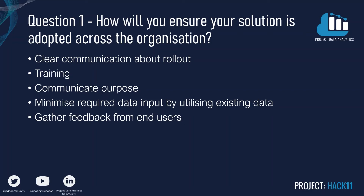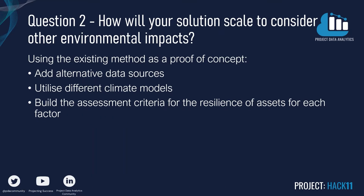Our methodology was designed to be scalable, allowing us to include further environmental factors to fully assess the resilience of the assets. To scale our solution to consider other environmental impacts, we would use publicly available environmental datasets, such as those provided by the Met Office and the UK government — the same sources we used to find the flooding data for this challenge. We would also utilise different climate models that are publicly available and provide data for different levels of warming, and build out our assessment criteria with TfL subject matter experts. We know they already track data on criteria such as ambient air temperatures, which can cause some of their systems to fail when they reach a certain threshold.